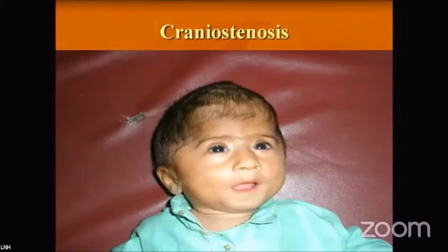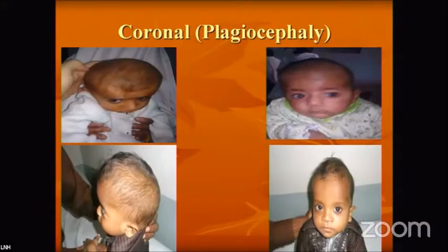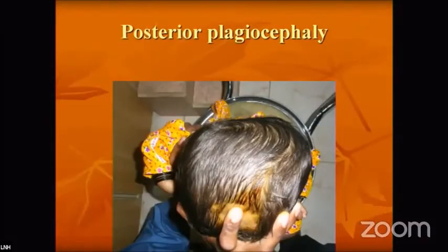In craniosynostosis, every child should be assessed for signs of raised ICP and neurological problems. In coronal plagiocephaly — either anterior or posterior — the posterior plagiocephaly demonstrates occipital growth on the left side while the right side is not growing.